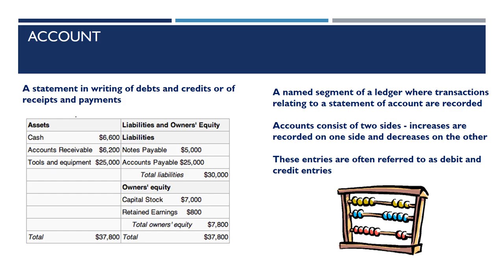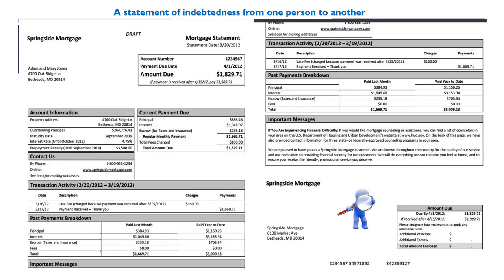An account is a named segment of a ledger where transactions relating to a statement of account are recorded. Accounts consist of two sides: increases are recorded on one side and decreases on the other side. These entries are often referred to as debit and credit entries. An example of a statement would be this mortgage statement — a statement of indebtedness from one person to another.